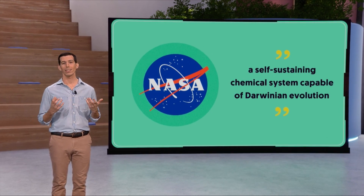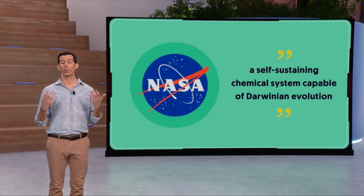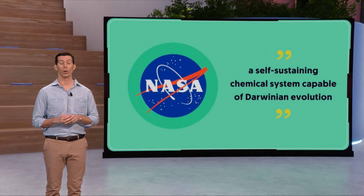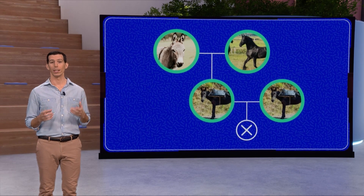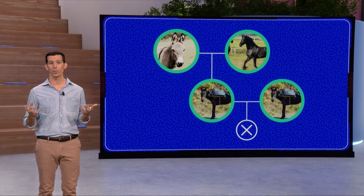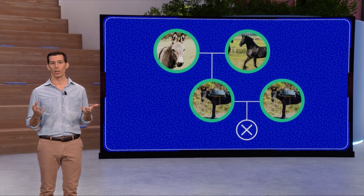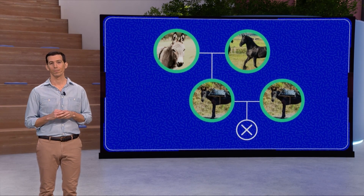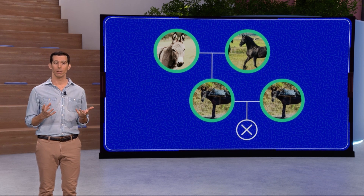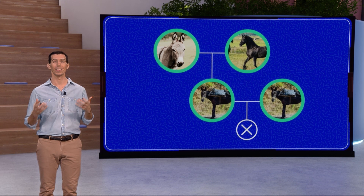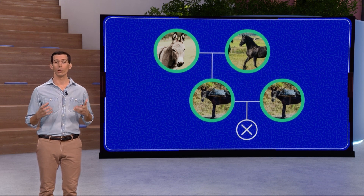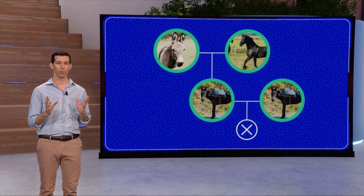However, let's consider the case of mules, the majority of which cannot create offspring. These animals are surely considered to be alive, yet if they cannot reproduce, then they cannot undergo Darwinian evolution. Regardless of the exact definition, the most basic and smallest form of life we know is a single cell. Therefore, in the lab, we try to create living cells from scratch as an ultimate goal.